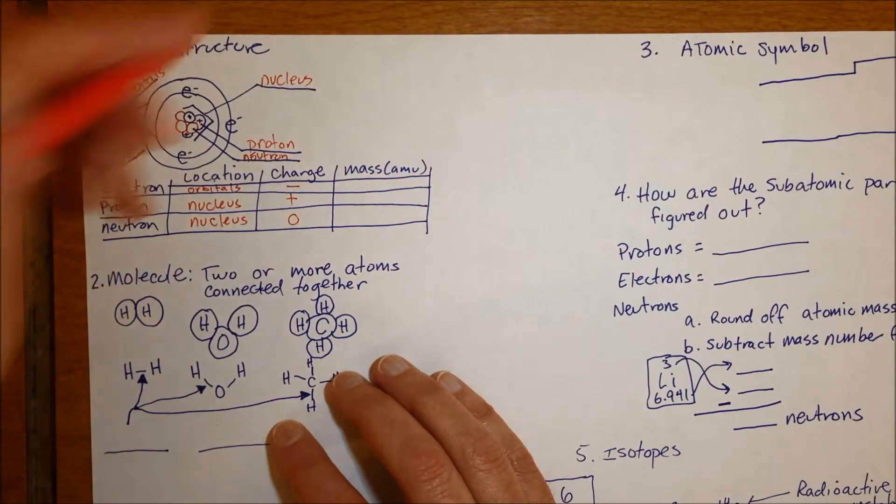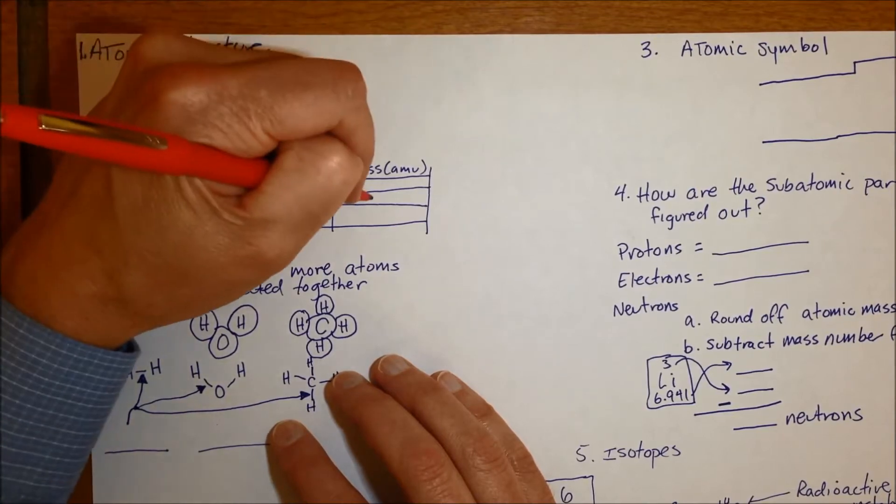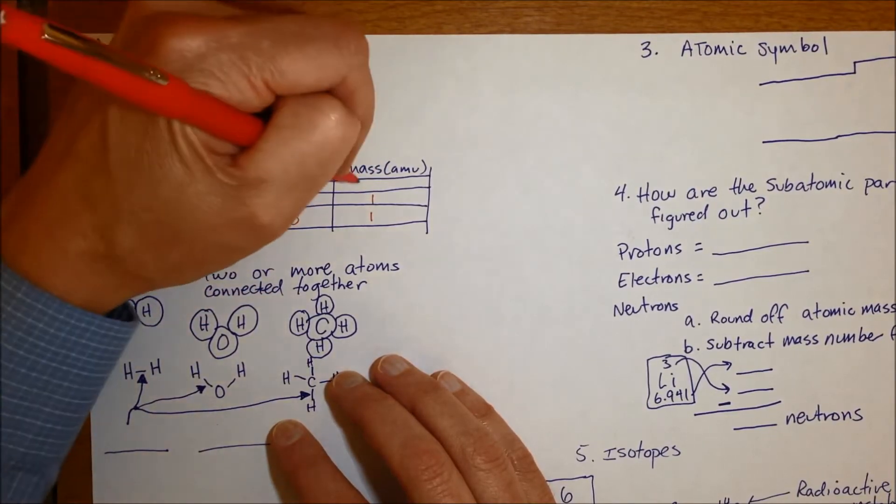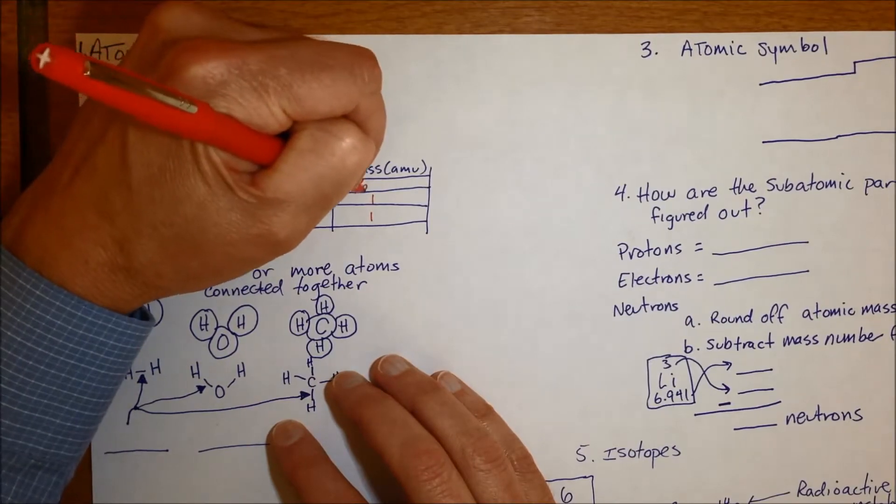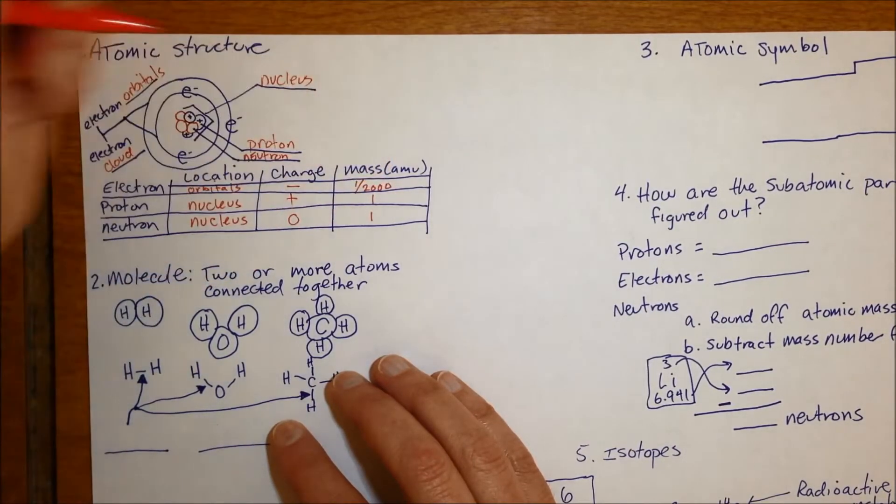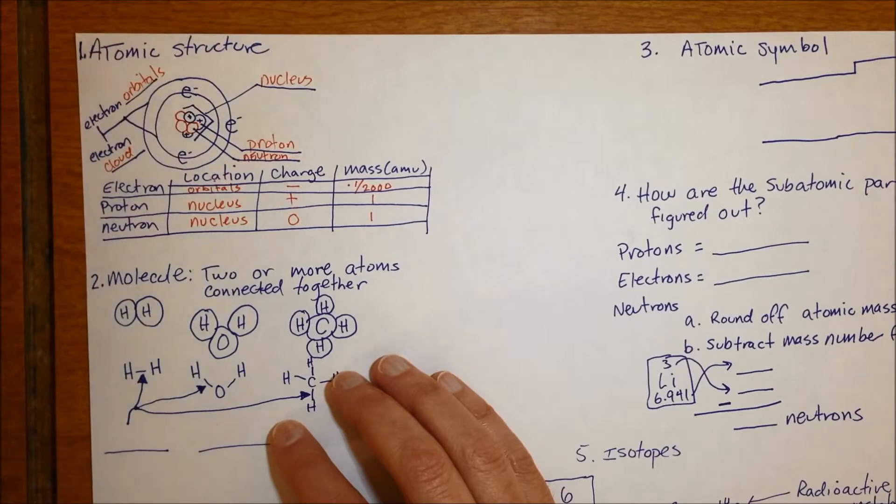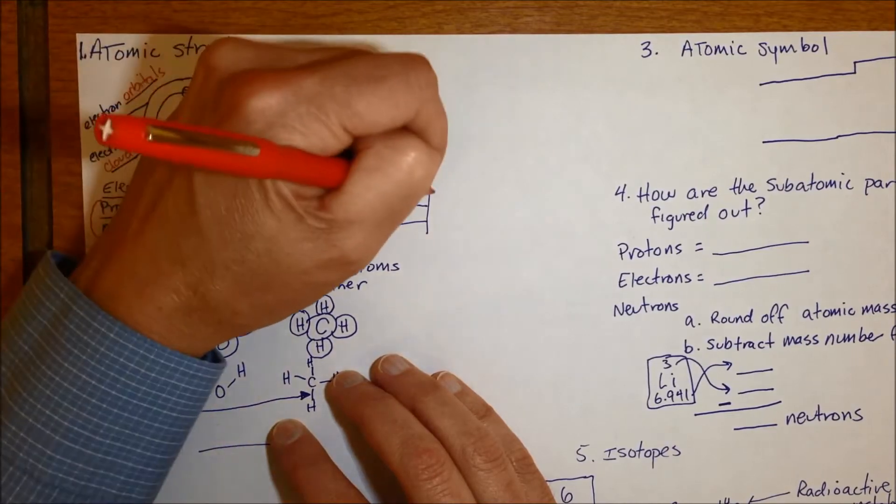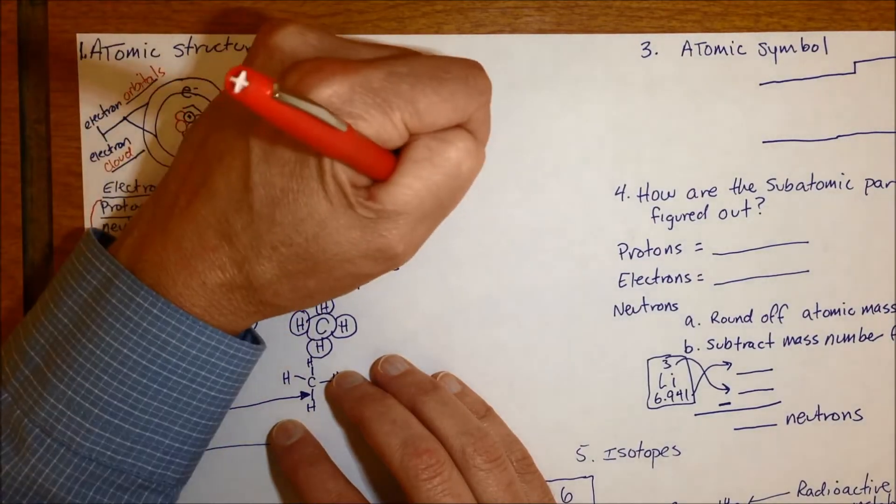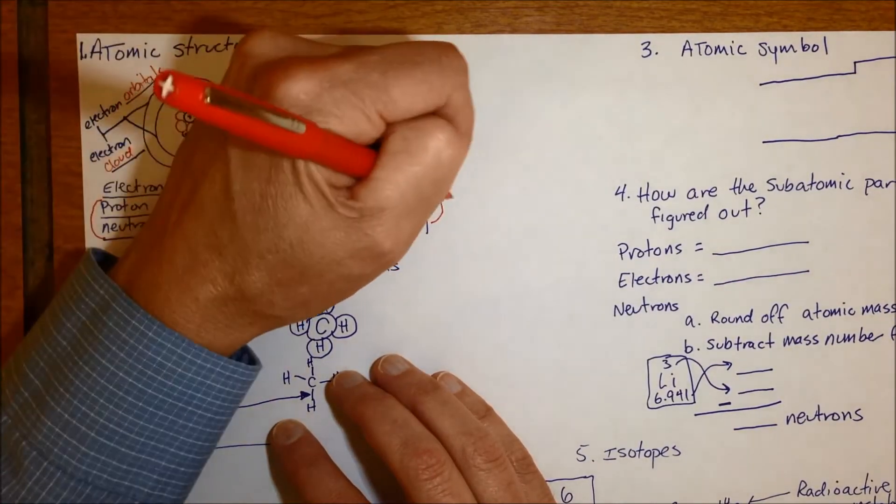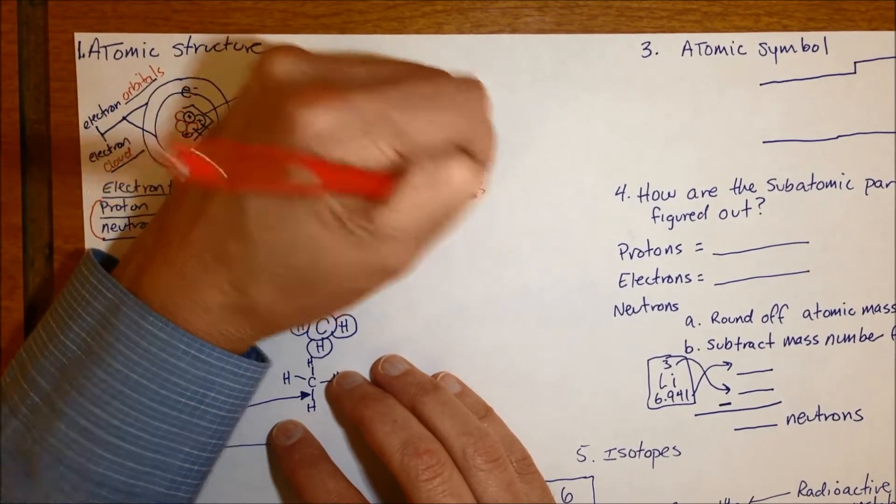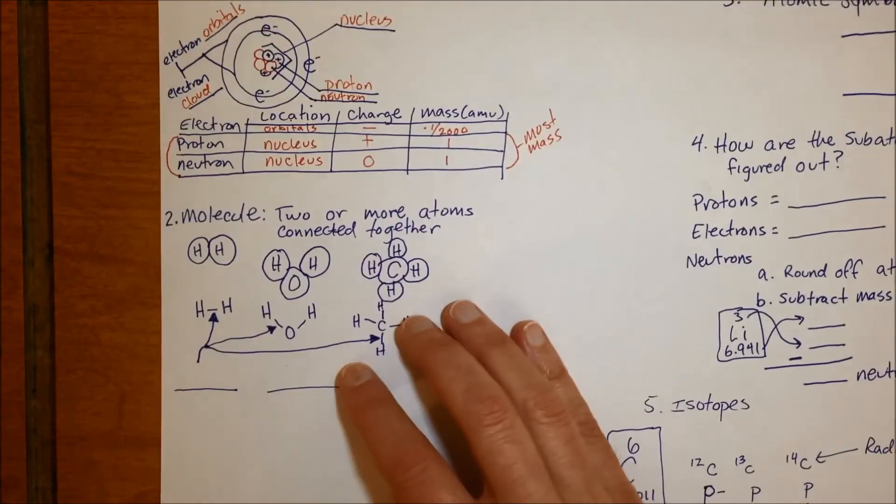And then as far as how much mass they have, protons and neutrons are both one atomic mass unit, also called one Dalton, and electrons are one-two-thousandth of that. So electrons are very light. In fact, most of the mass of an atom comes from the protons and neutrons. Electrons are only a small contributor to all of that.